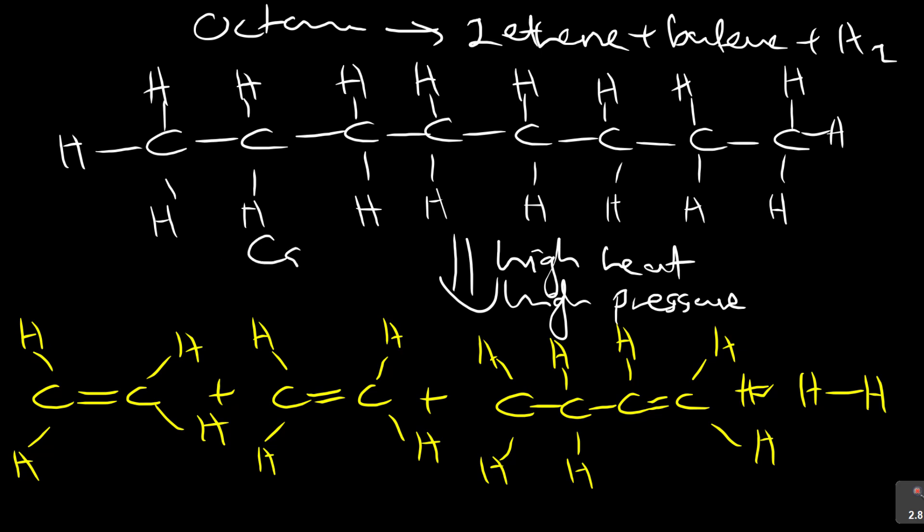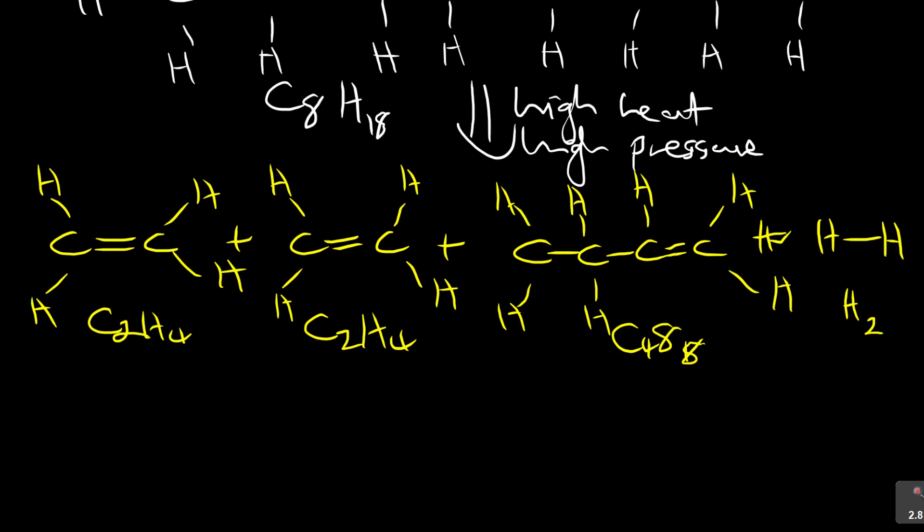Now let's look at the formulas. The first one is C8H18. Let's look at this one here: C2H4, C2H4, C4H8, and H2. Let's count how many carbons: two plus two plus four is eight, so C8. How many hydrogens? Four, eight, sixteen, seventeen, eighteen—H18. See that? It does balance.